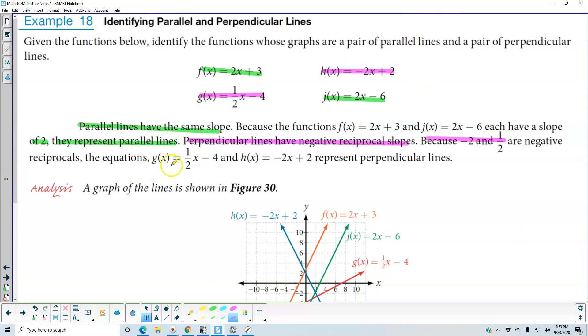the equations g(x) = 1/2x - 4 and h(x) = -2x + 2 represent perpendicular lines.